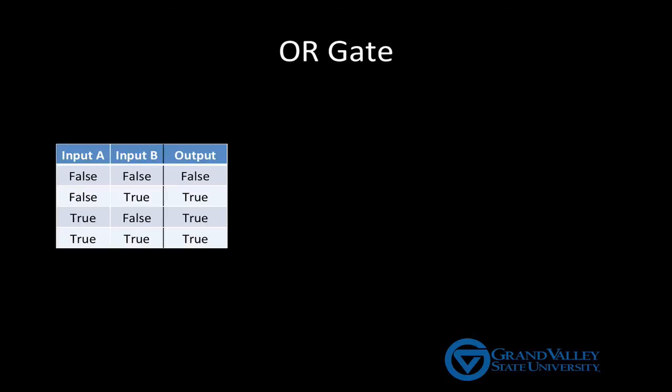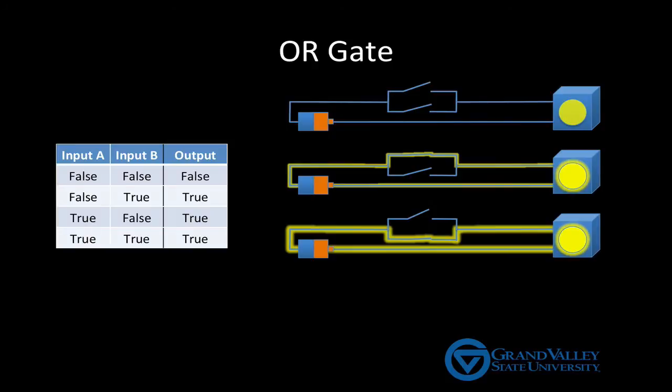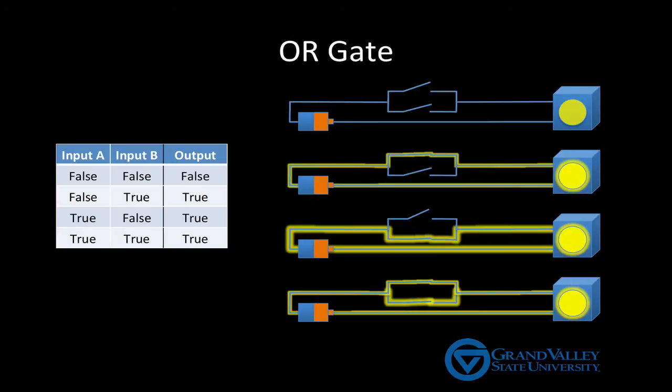To build an OR gate, we connect the switches in parallel. Since there are now two paths through the circuit, if either switch is ON or both switches are ON, then the circuit is complete and the output is a logical TRUE. Again, you can see that each possible combination of switch positions corresponds to one line of the OR gate's truth table.